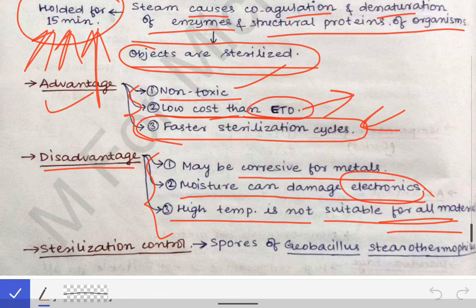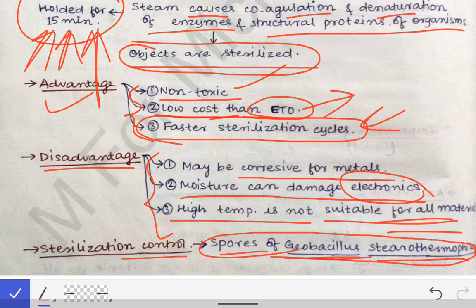Sterilization control — to check whether the autoclave is functioning properly, we use Geobacillus stearothermophilus. The spores of this bacteria are placed inside the autoclave, and after 15 minutes we check whether the spores are live or dead. If the spores are still alive, the autoclave is not functioning well and should be discarded or modified. If the spores are dead, the autoclave is functioning properly.